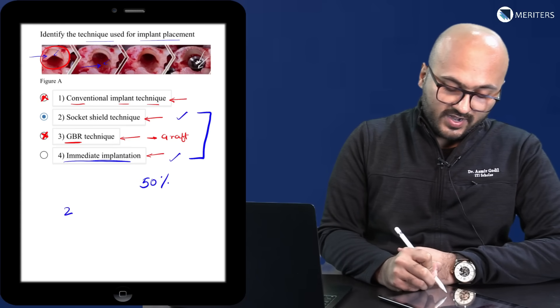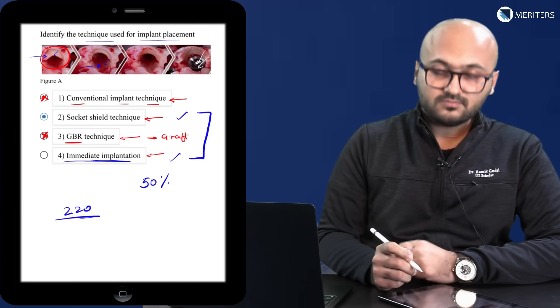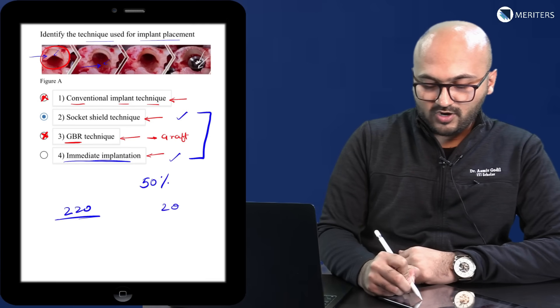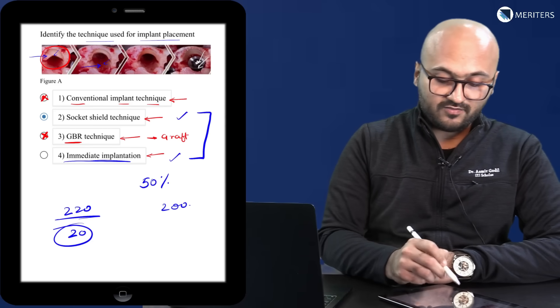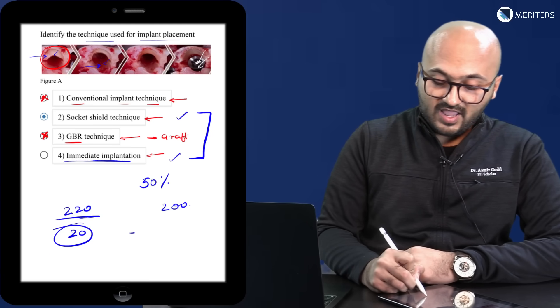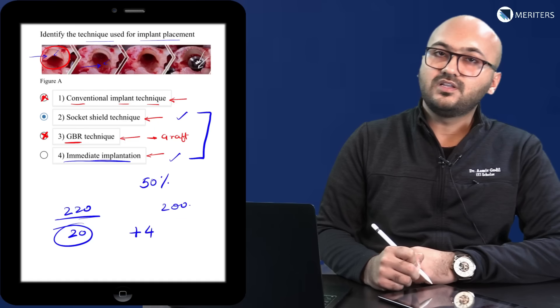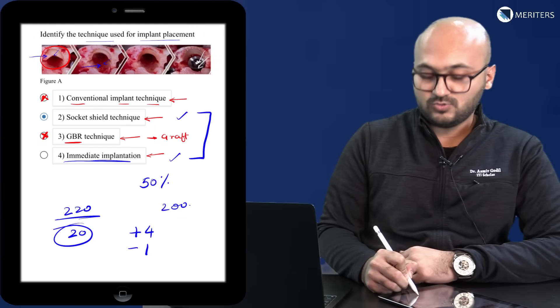Now if you attempt 220 questions for example, how do you do that? Suppose if you're confident with 200 and the 20 other questions that you are attempting you have to smart guess. For every correct answer you get a plus 4. For every incorrect you get minus 1.